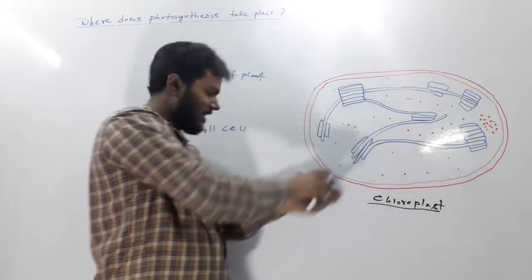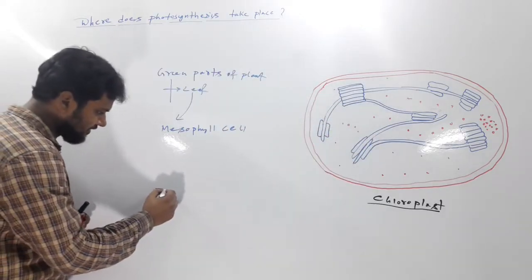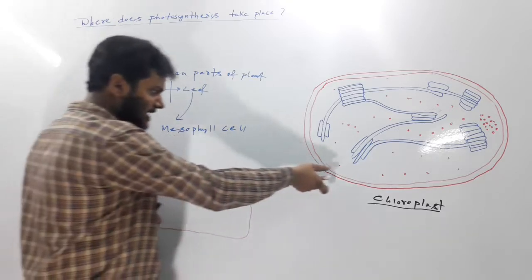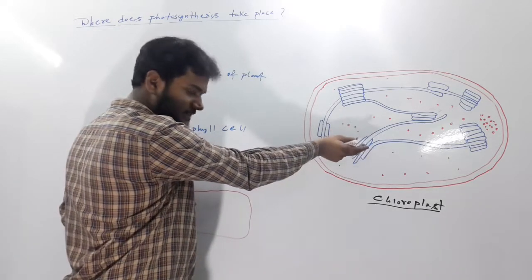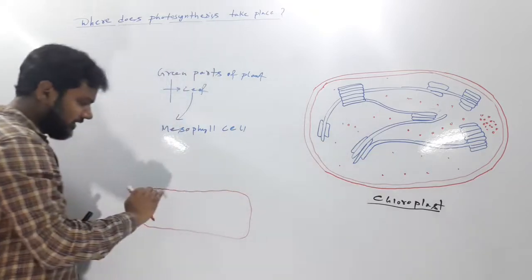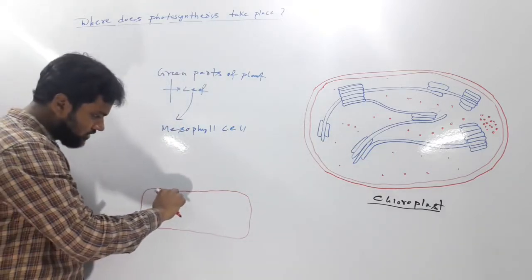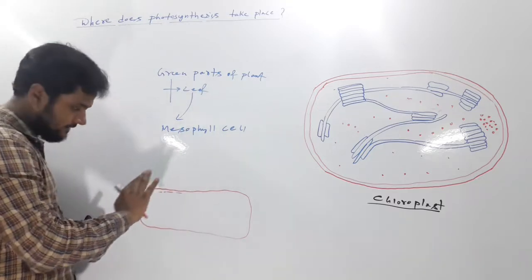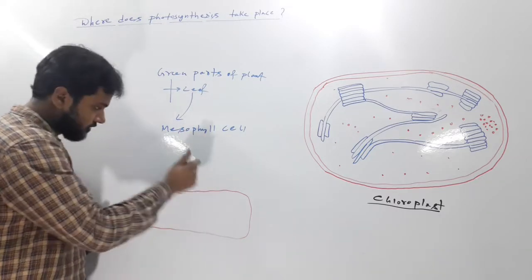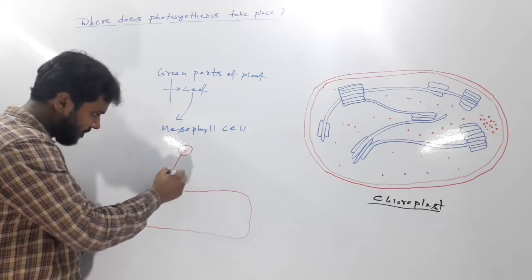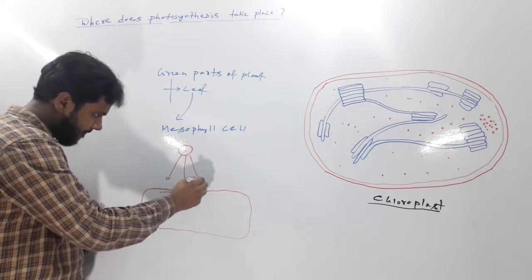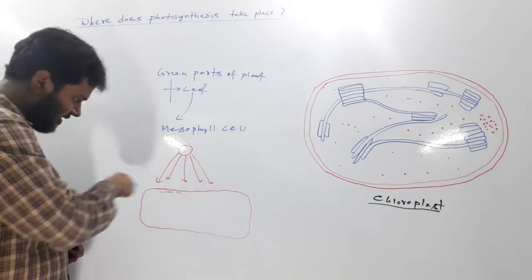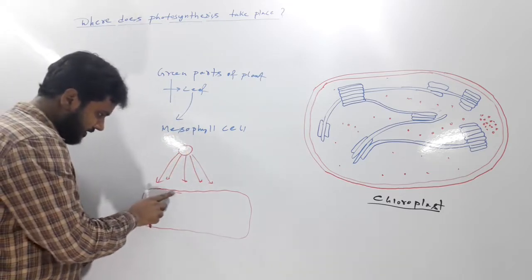Suppose this is the mesophyll cell. These chloroplasts have flattened surface and they will align along the walls of the mesophyll cell. Chloroplasts are aligned along the walls. Suppose this is sunlight being incident into the mesophyll cell.